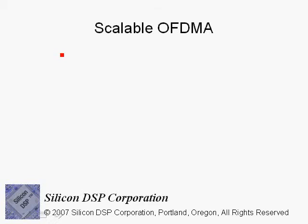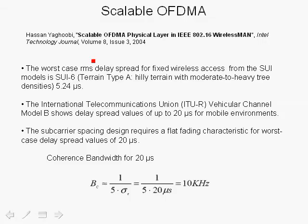In this section, we will discuss Scalable OFDMA, or Scalable Orthogonal Frequency Division Multiple Access, which is employed in IEEE 802.16e or Mobile WiMAX, and it offers a number of key benefits that we will discuss. For a complete description of Scalable OFDMA, take a look at the article by Hassan Yagoubi in the Intel Technology Journal, published in 2004. The ideas presented here are mainly due to Yagoubi's article.